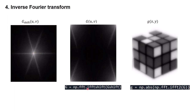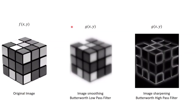Before taking the inverse Fourier transform, we need to shift the low frequencies back to the corners using np.fft.ifftshift. Finally, we take the inverse Fourier transform and calculate the absolute value to get our filtered image back in the spatial domain. This result is the Butterworth low pass filtered image, and we can do the same process to obtain the Butterworth high pass filtered image.